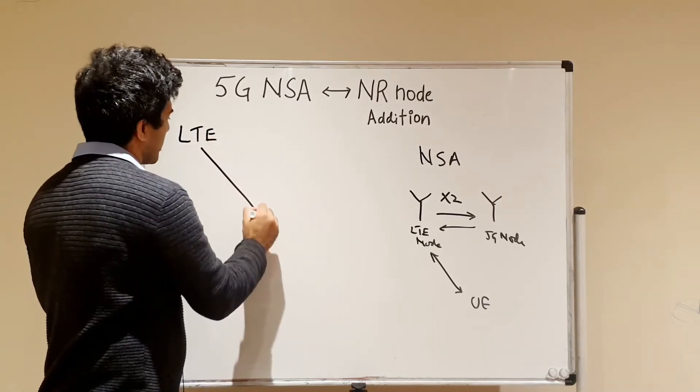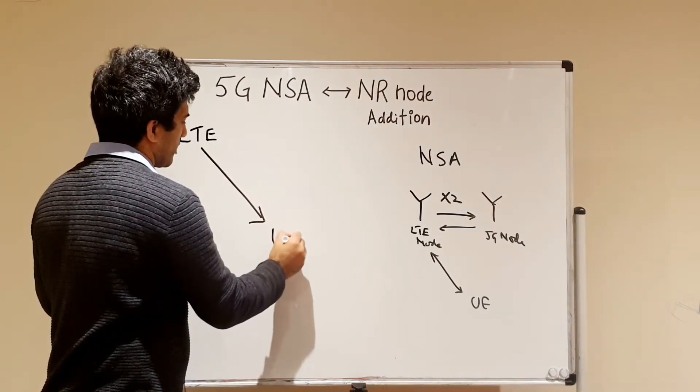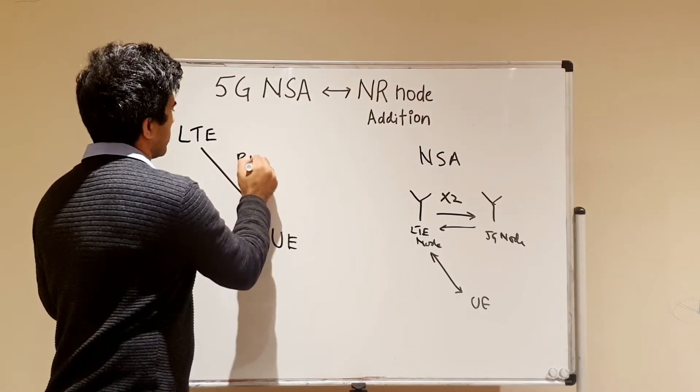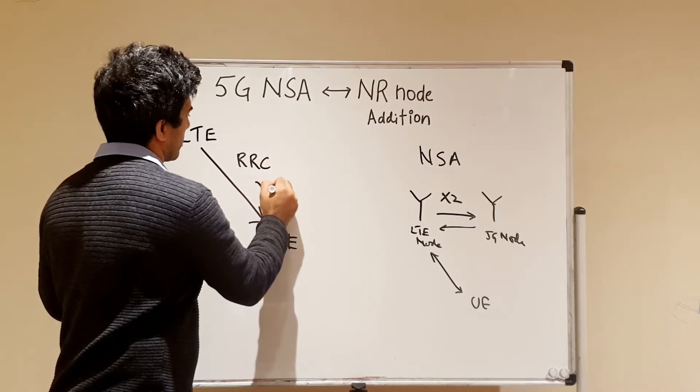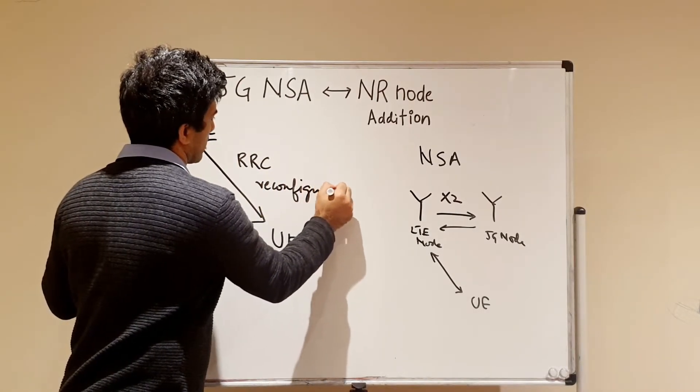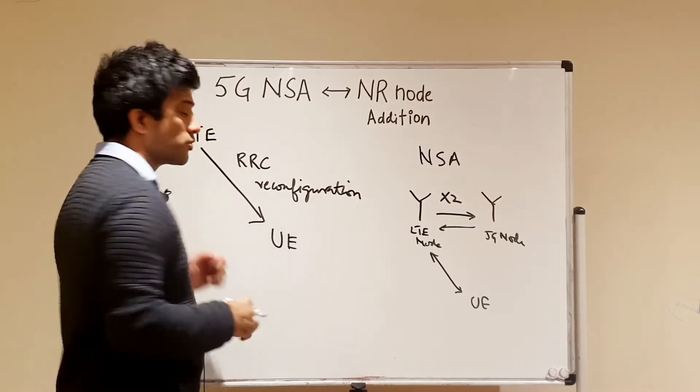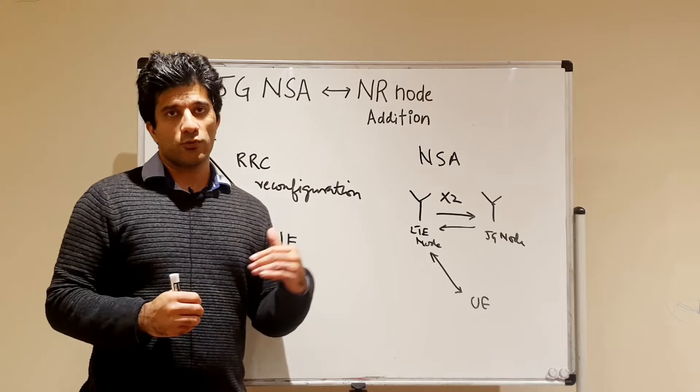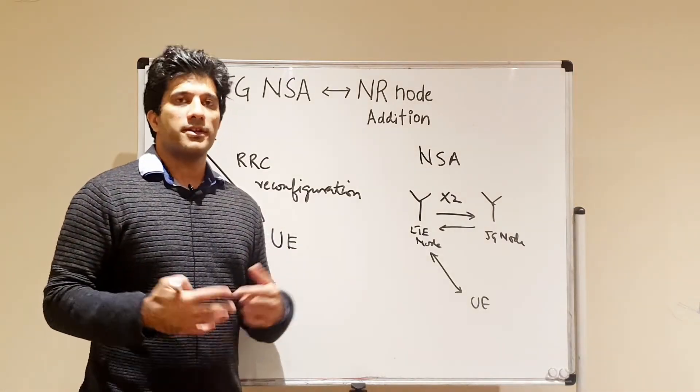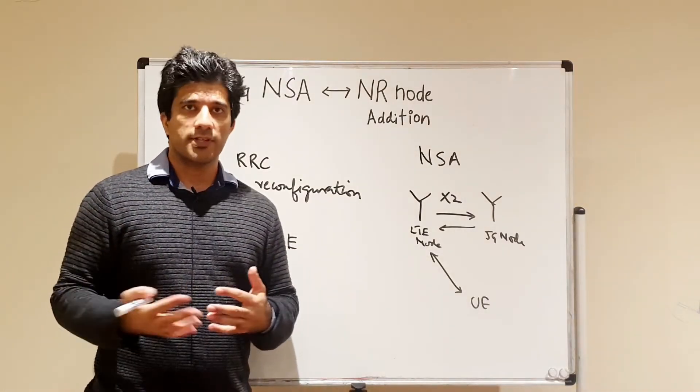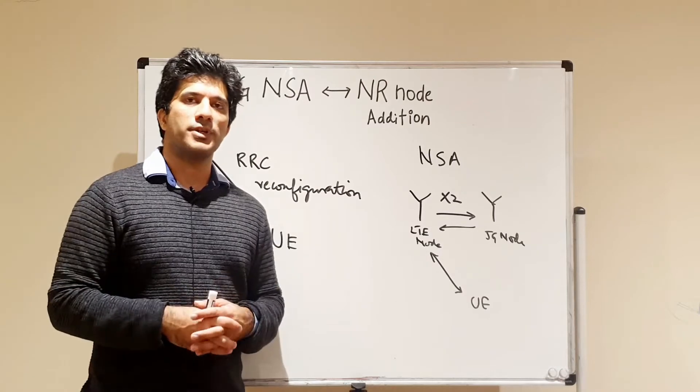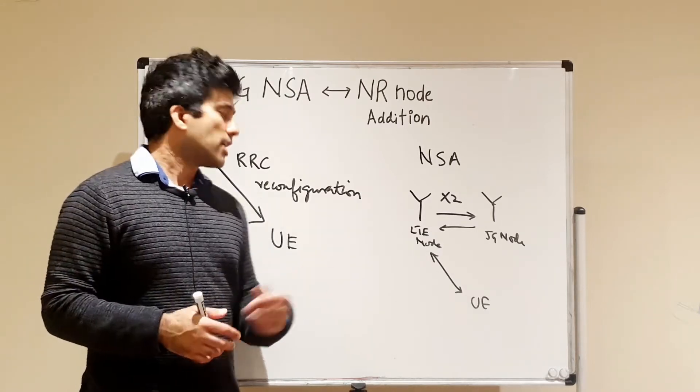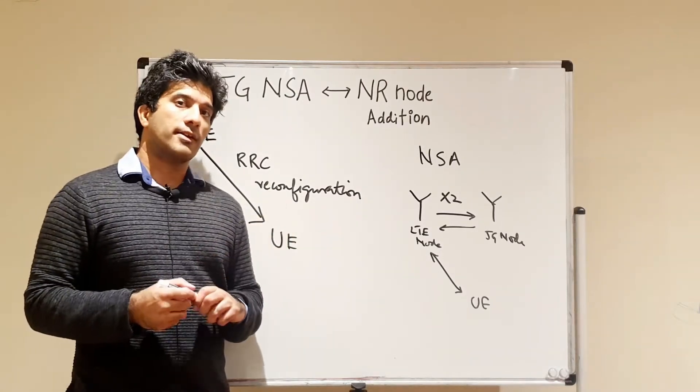Once the LTE node connection is set up, then the LTE node will send a message to UE for RRC reconfiguration. This is one of the many RRC reconfiguration messages that the LTE node sends to the UE.